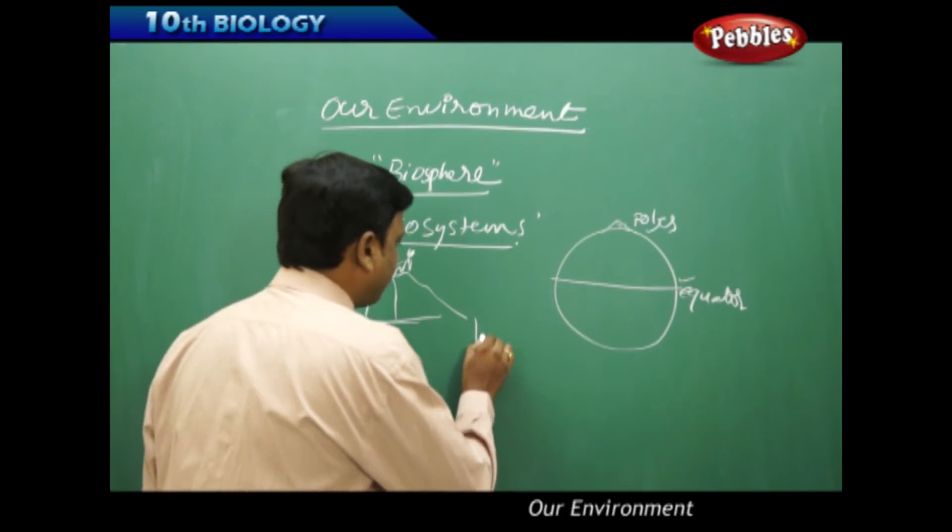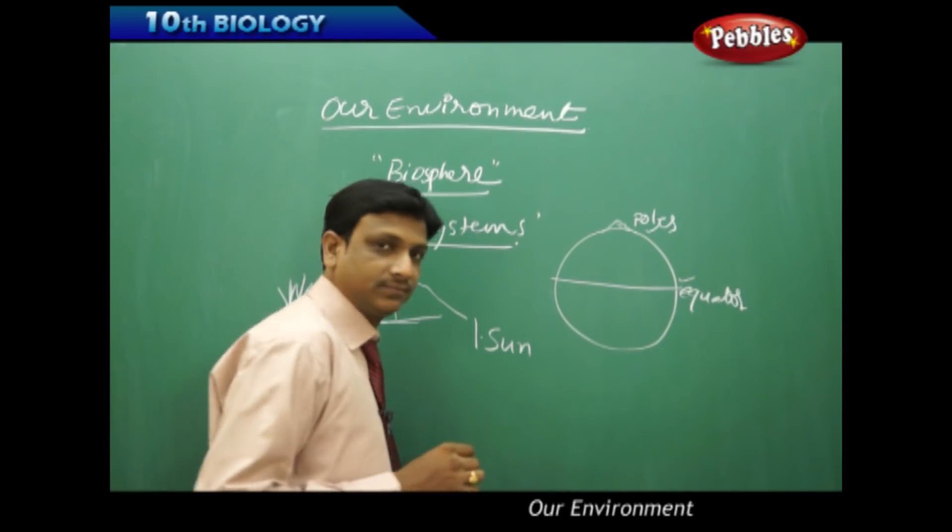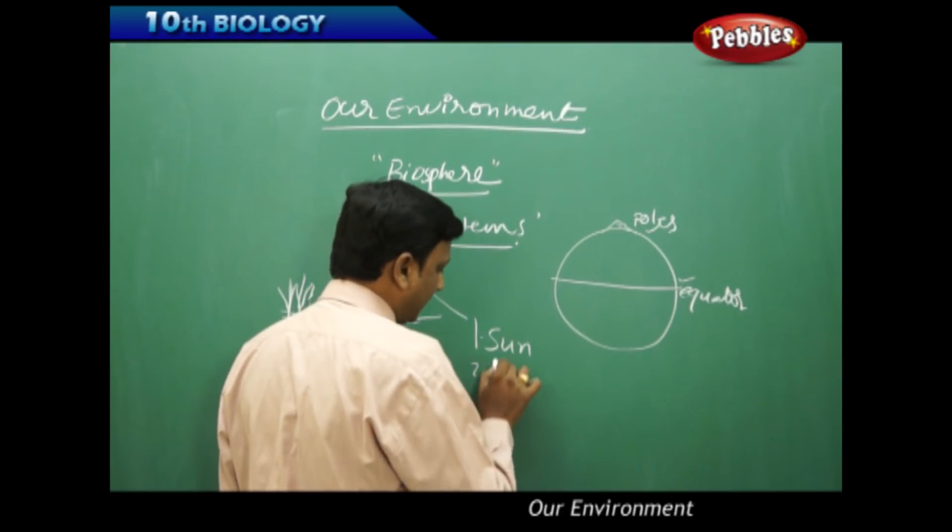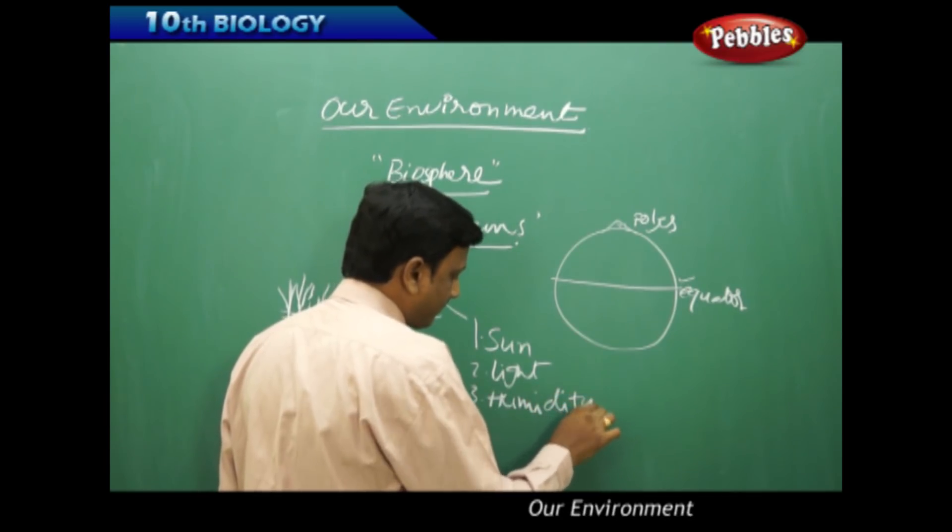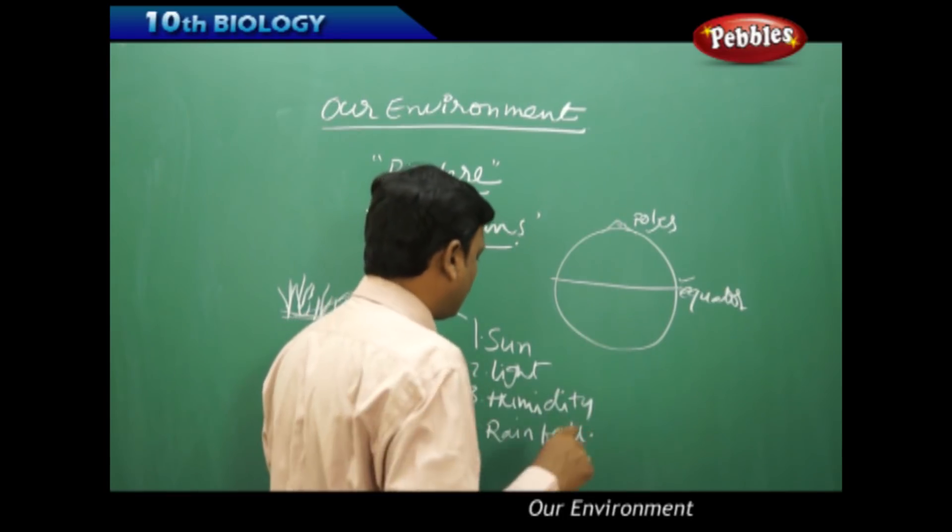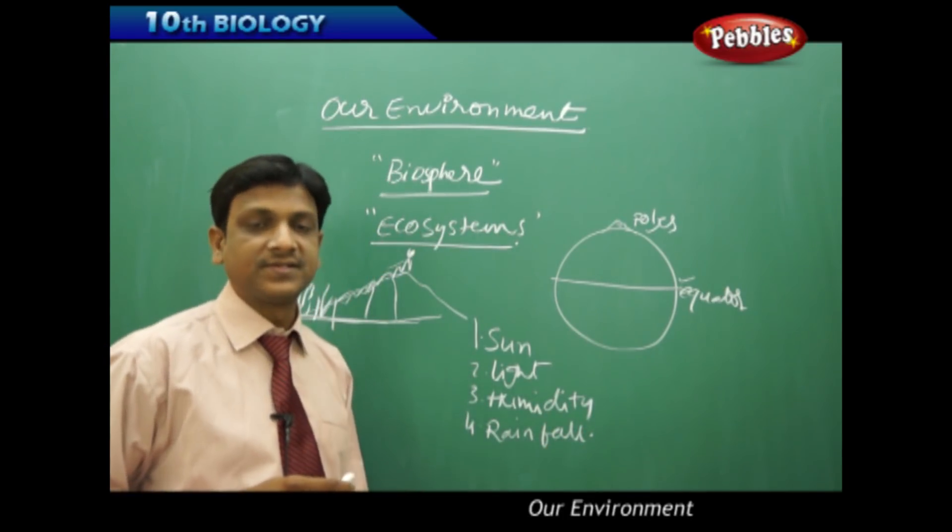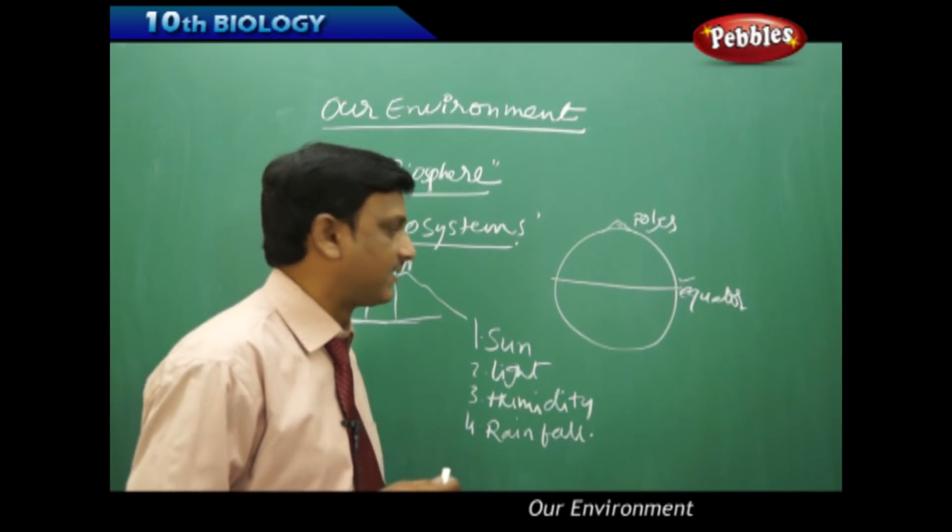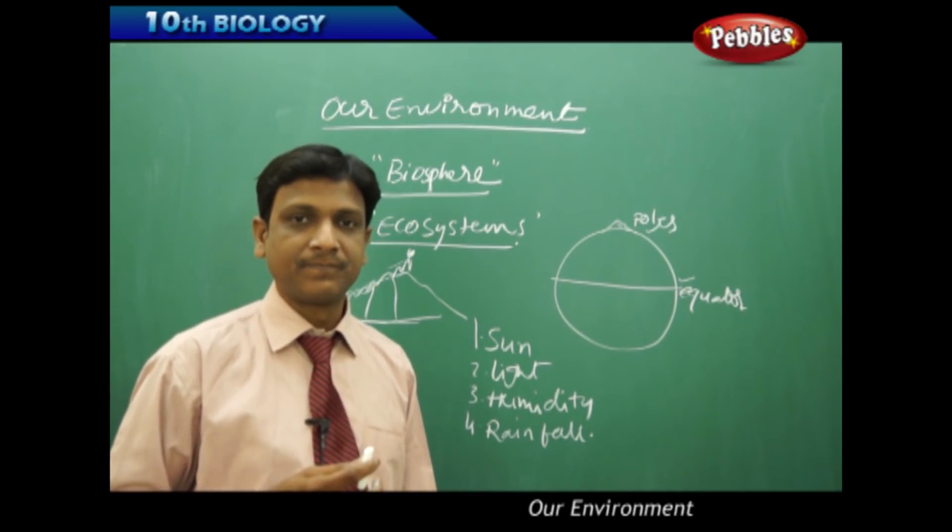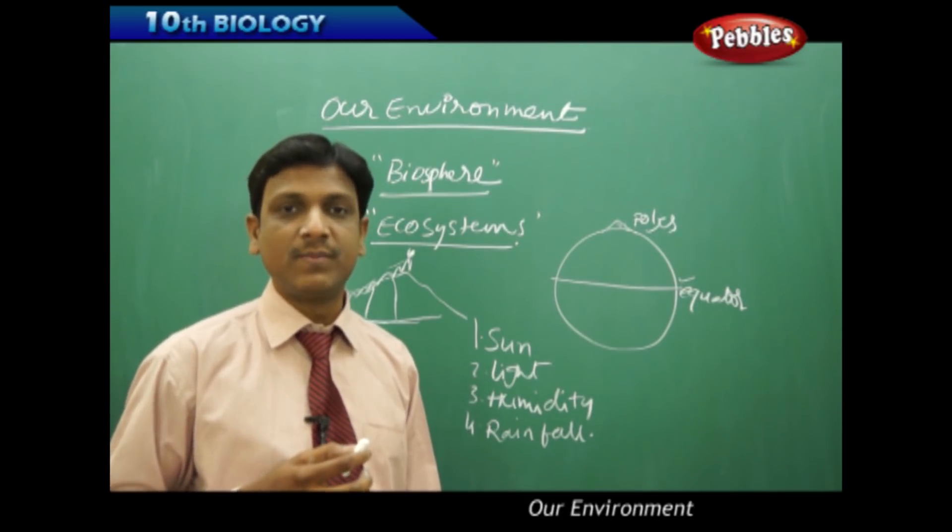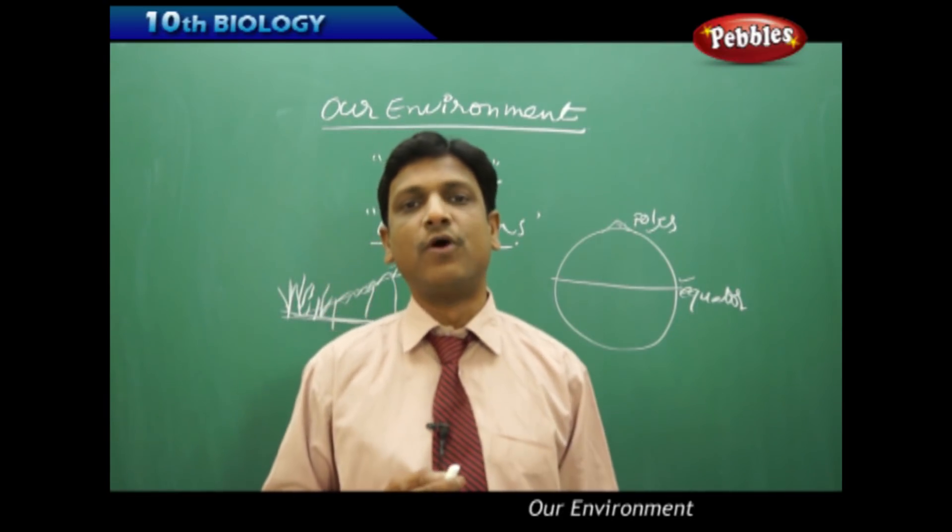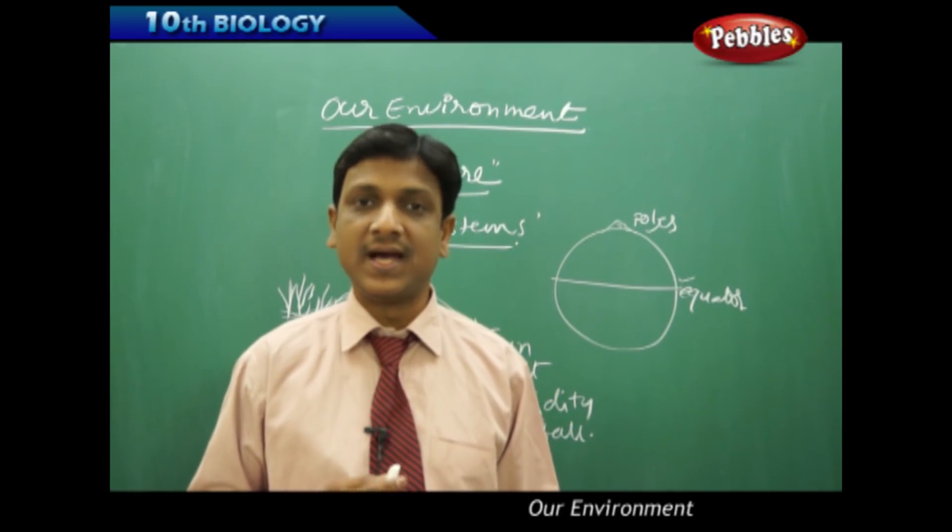If we look at the first one, the sun or the light availability, humidity, rainfall. These are the various climatic factors that influence an ecosystem. If you see the desert, it's greatly influenced by that extreme low rainfall and extreme heat, high temperatures.